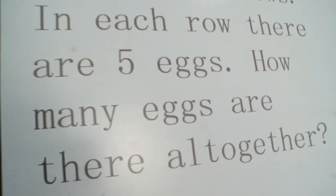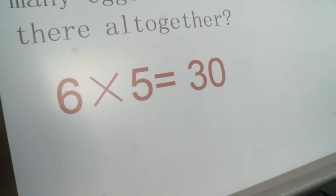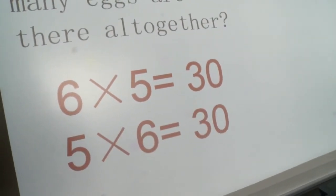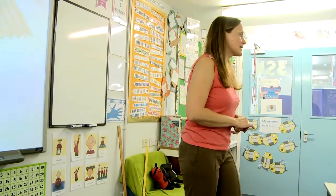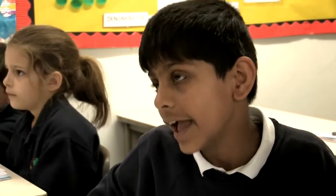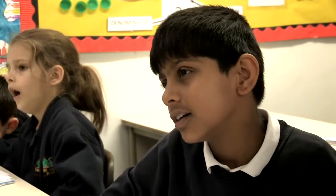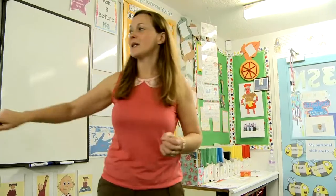So there are six rows and in each row there are five eggs. How many eggs are there altogether? What's the number sentence? Kara-san, what's the number sentence? Five times six equals thirty or six times five equals thirty. So we've got six times five equals thirty or five times six equals thirty. What does six times five equals thirty mean? The six means six rows and the five means five eggs in each row. And the thirty means how many eggs altogether.